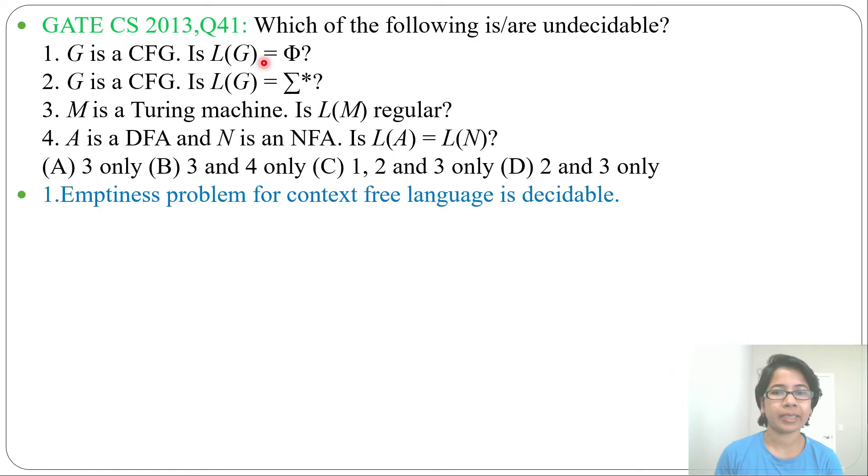You can check whether a grammar is empty or not by removing null productions, then unit productions, and useless symbols. After removal, if it generates at least one string then it's not empty. If it's not generating anything then it's an empty language. So emptiness problem for context-free languages is decidable.